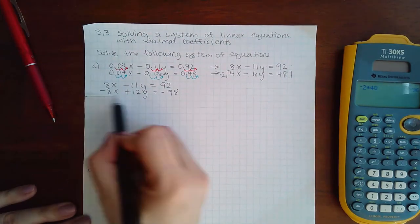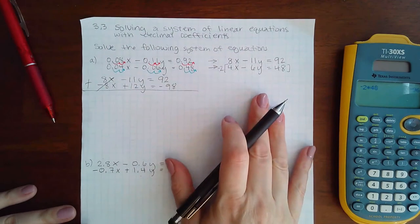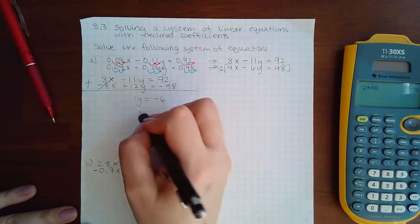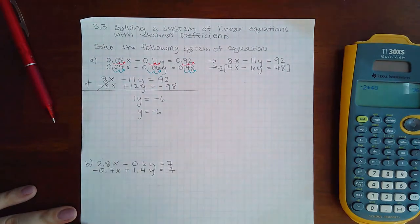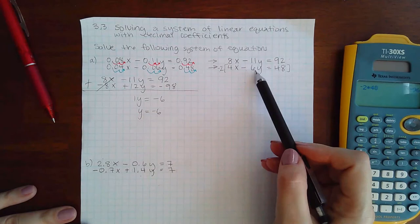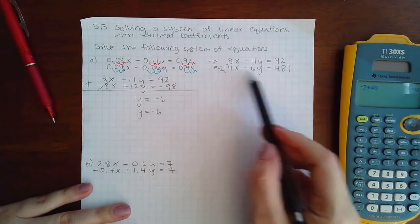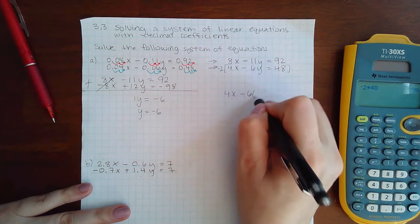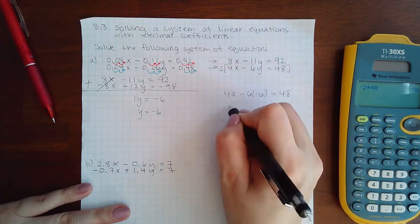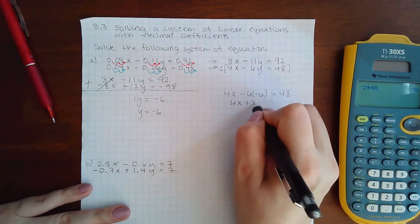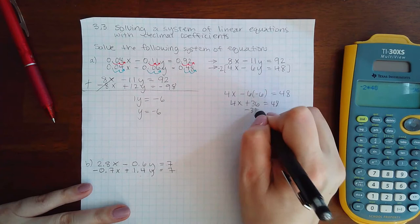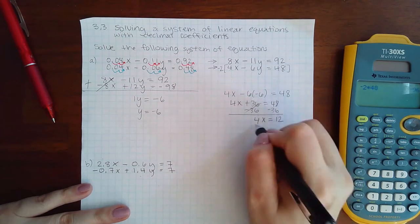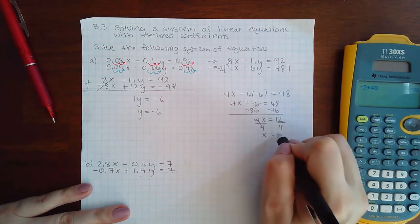Then I can add these two together, now eliminate the x's, and I get 1y equal to negative 6, or just y equals to negative 6. Again, I can plug that value into either one of the equations. It doesn't matter. I usually like to use the one inside the bracket. So I'm going to say 4x minus 6 times negative 6. So I get 4x plus 36. So I'm going to minus 36. I get 4x equal to 12. Divide by 4, I get x equal to 3.